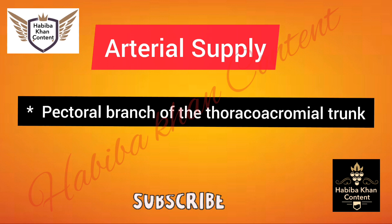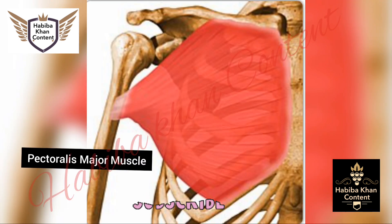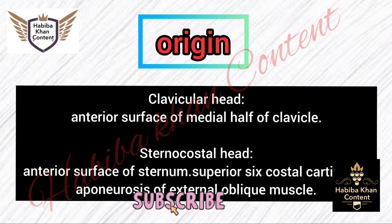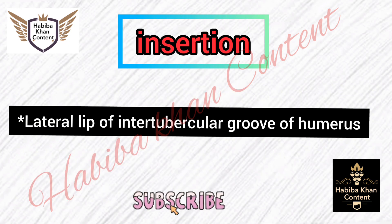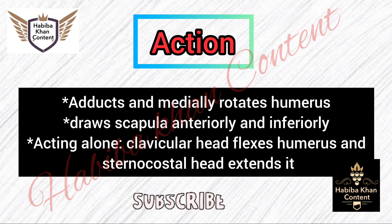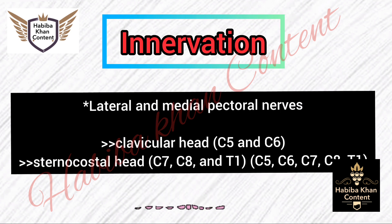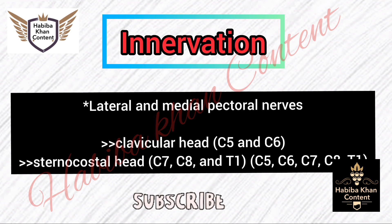Pectoralis major muscle. Origin — clavicular head: anterior surface of medial half of clavicle; sternocostal head: anterior surface of sternum, superior six costal cartilages, aponeurosis of external oblique muscle. Insertion: lateral lip of intertubercular groove of humerus. Action: adducts and medially rotates humerus, draws scapula anteriorly and inferiorly; clavicular head flexes humerus, sternocostal head extends it. Innervation: lateral and medial pectoral nerves; clavicular head C5–C6, sternocostal head C7–C8–T1. Arterial supply: pectoral branch of thoracoacromial trunk.